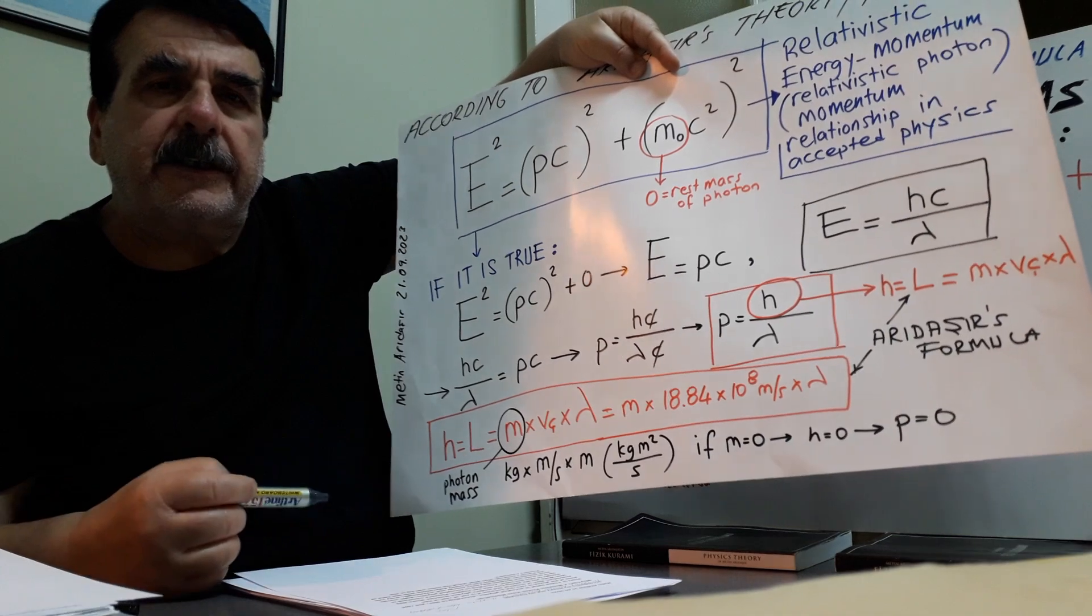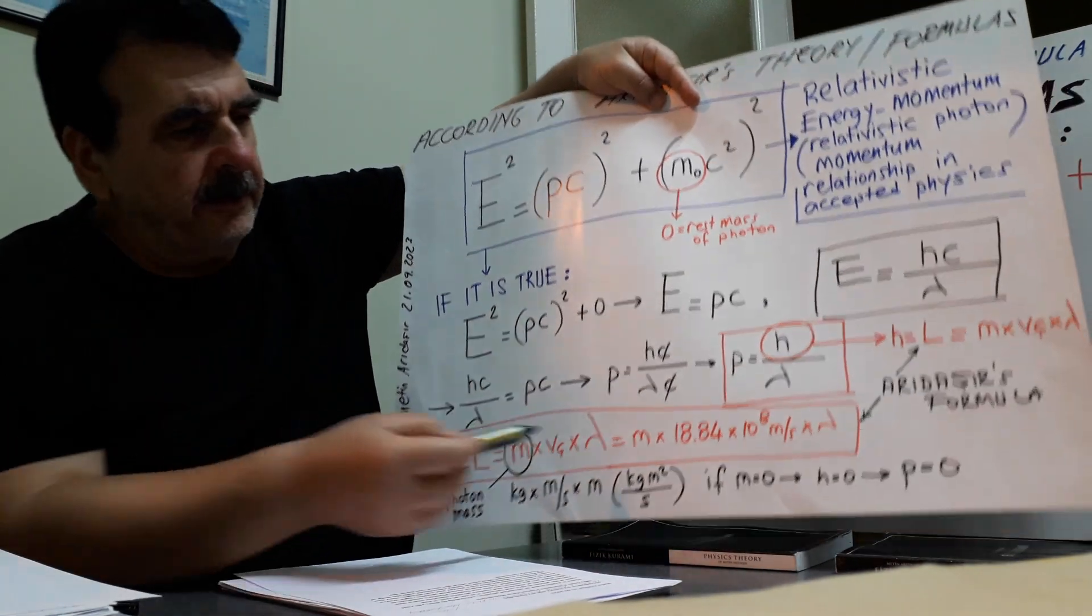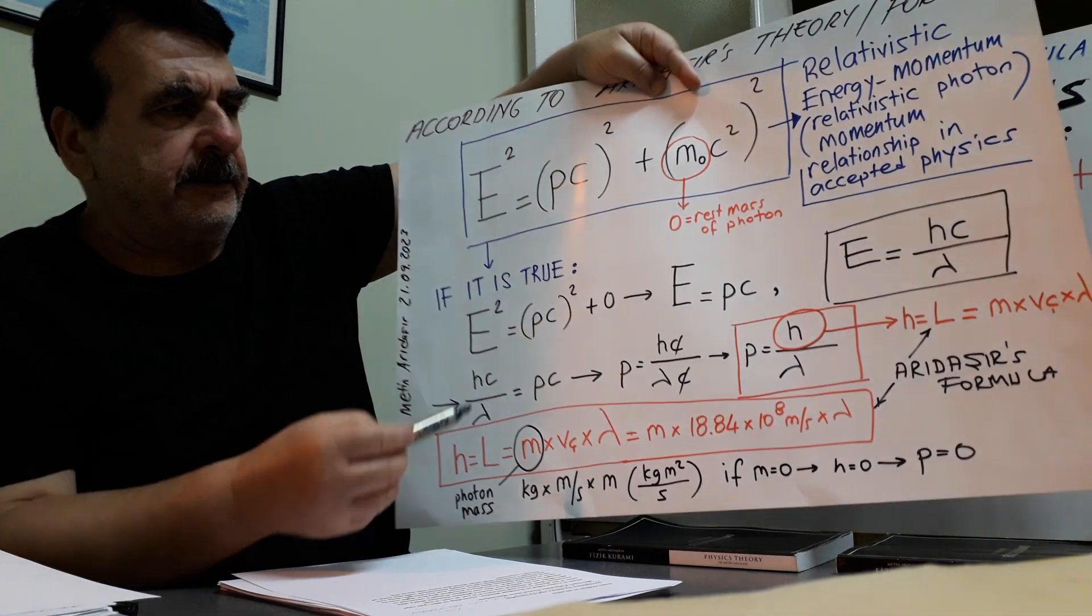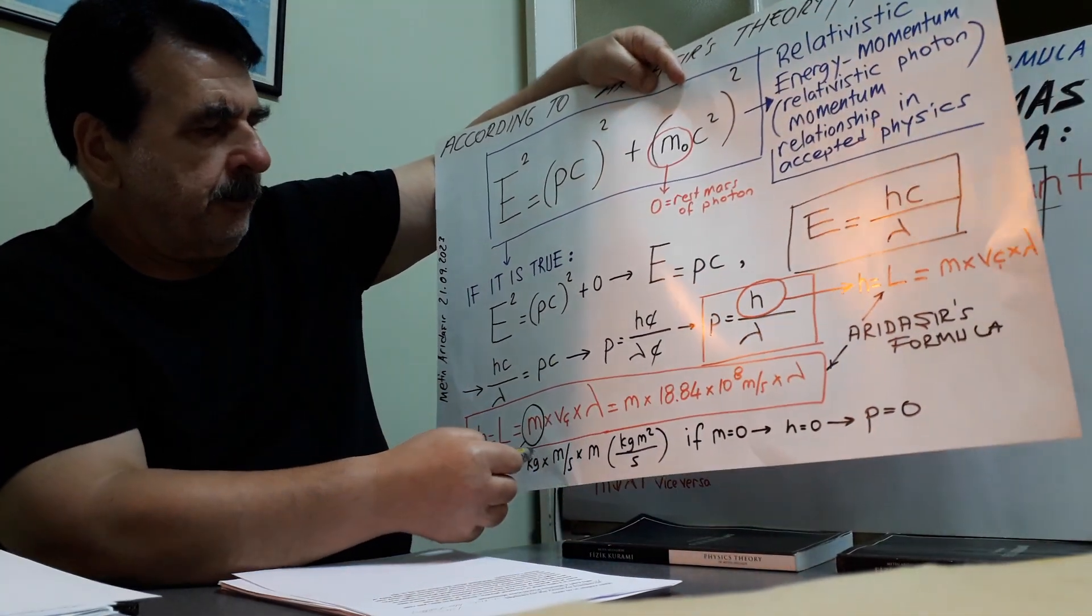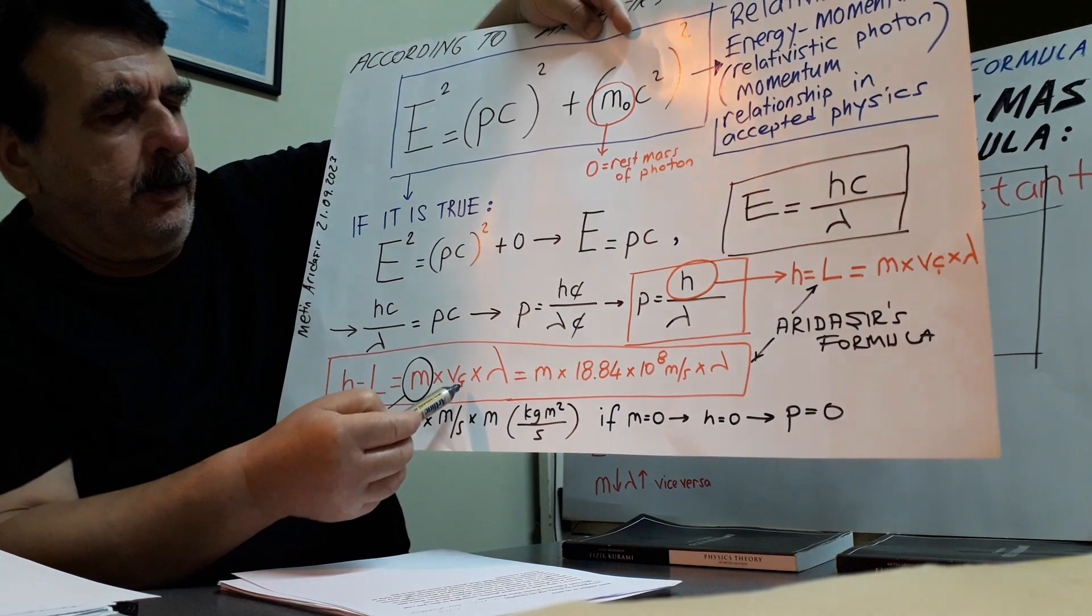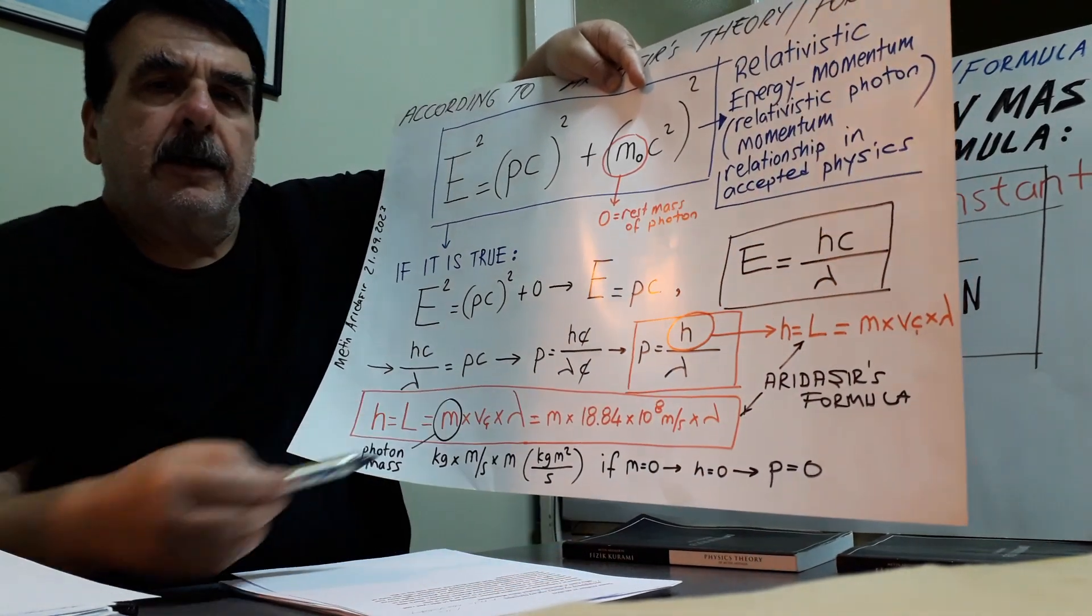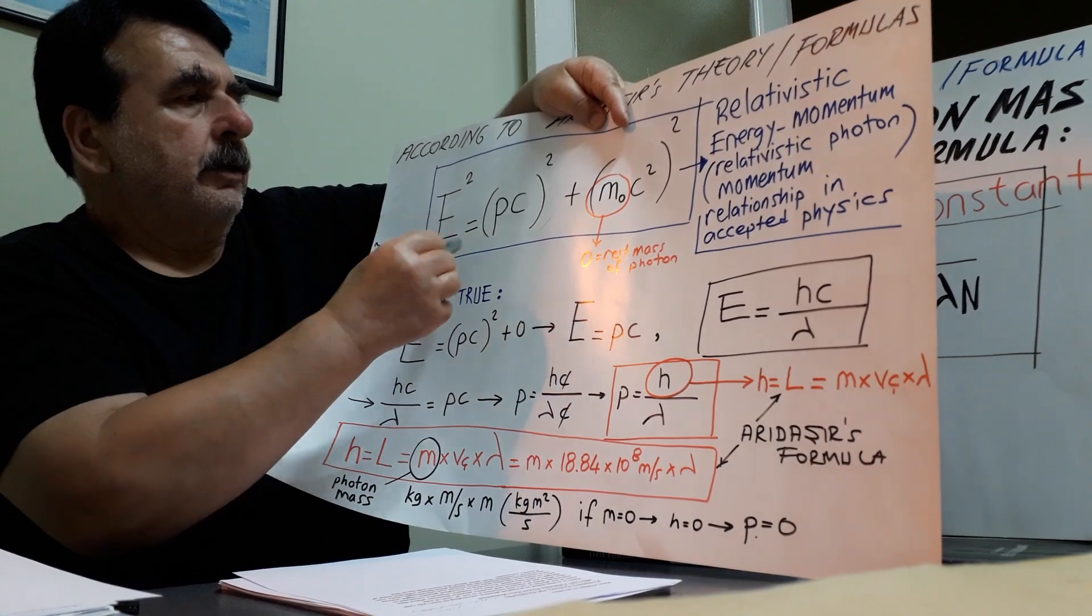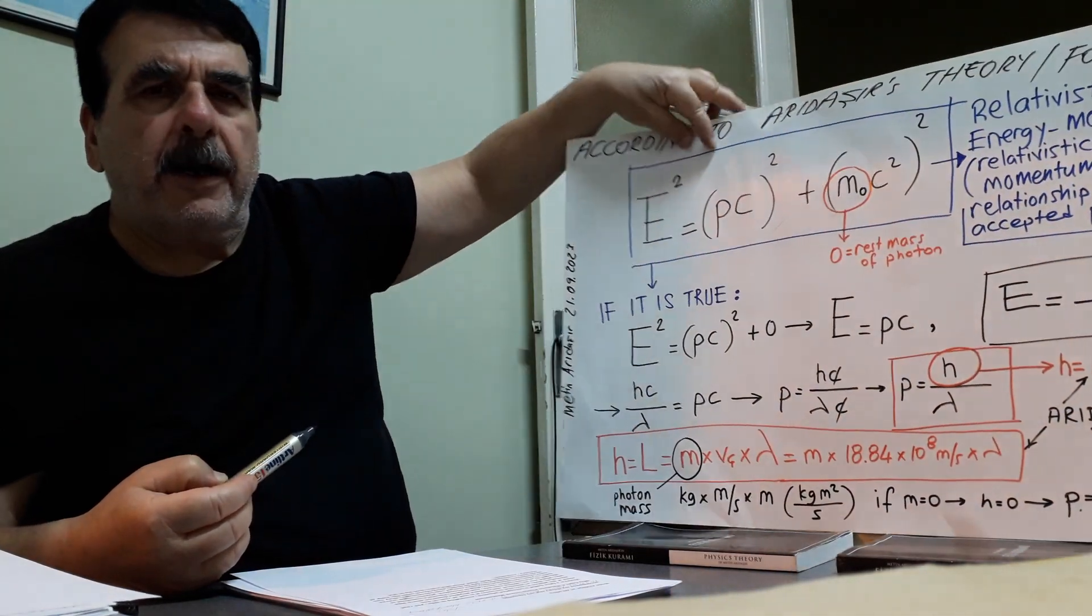And photon mass is hidden in angular momentum. In other words, photon mass in kilogram, photon mass is hidden in Planck's constant. If photon mass were zero, Planck's constant or angular momentum of photon would be zero. Then momentum would be zero. Then all of these parts of equation would be zero and energy would be zero. So, this is my explanation.